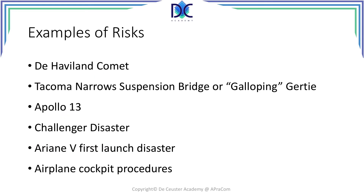Let's look at some examples of risks that occurred with projects in the past. First, the de Havilland Comet — a very advanced pressurized airplane that unfortunately had some flaws and it crashed after a number of cycles. The problem was found with the design of the windows. Another example is the Tacoma Narrows suspension bridge, also called Galloping Gertie, because of the effect wind had on the bridge. Wind speeds increased, the instability of the bridge increased, and finally it broke into pieces.